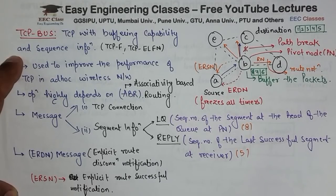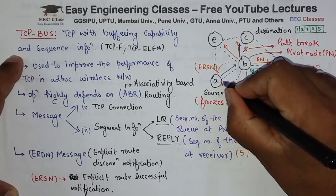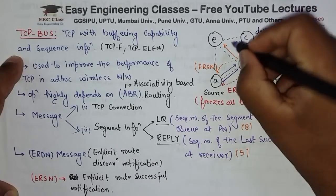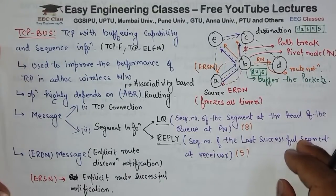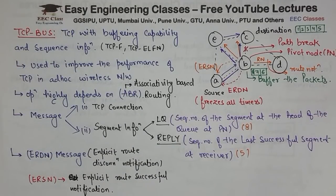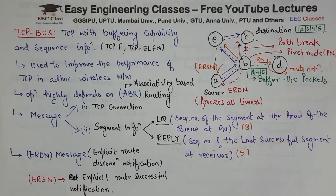A ko pata hai ki 5 tak pahunch chuka hai aur 8 tak buffer mein hai, toh A wapas sequence number 9 se bhejna shuru karega. So the new path will be A to B, B to E, and then E to C. That is how TCP BUS will work. ERDN bhejte hain jab path break ka pata lagta hai, ERSN bhejte hain jab path ko dobara re-establish kar lete hain, aur LQ aur Reply packet ka main use is for segmentation — ki kaunsi segment ki information pahunch chuki hai, kahan tak pahunch chuki hai.